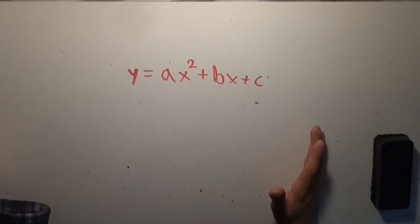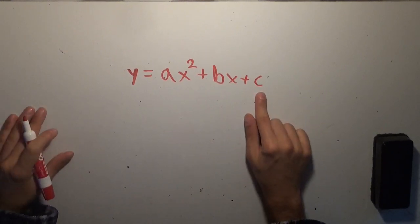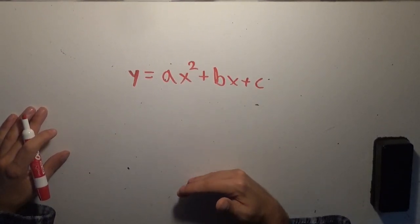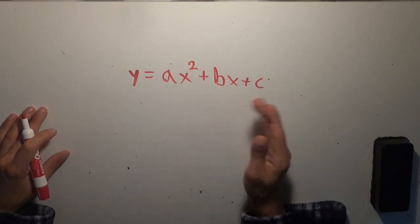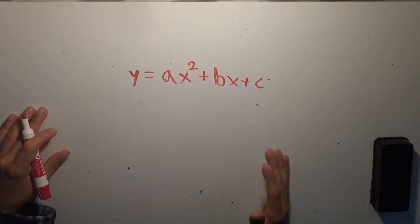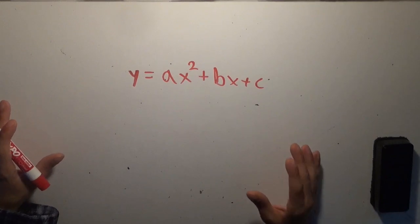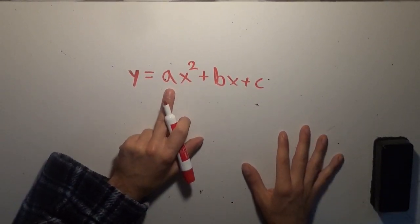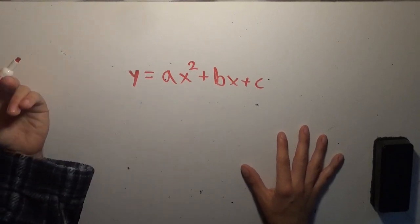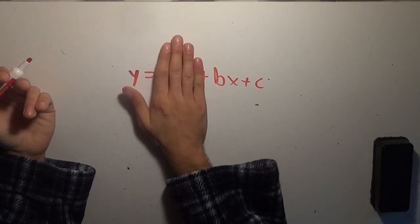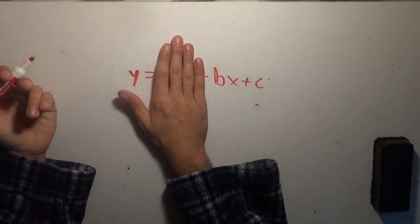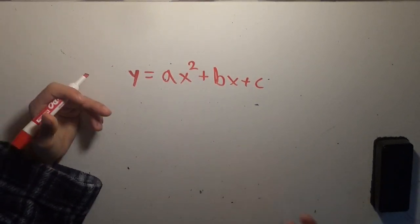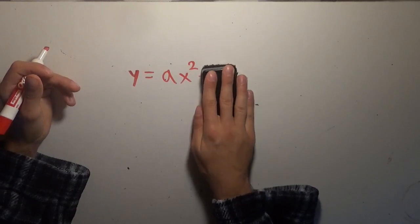The b and c values have nothing to do with the actual shape. Adding c simply moves the parabola up and down by c, and b has to do with its position left and right. The only thing that has any effect on the stretched-out shapiness of the parabola is the coefficient a. And the only thing a can't be is zero, because if a were zero we would just have a linear graph — it wouldn't be quadratic.